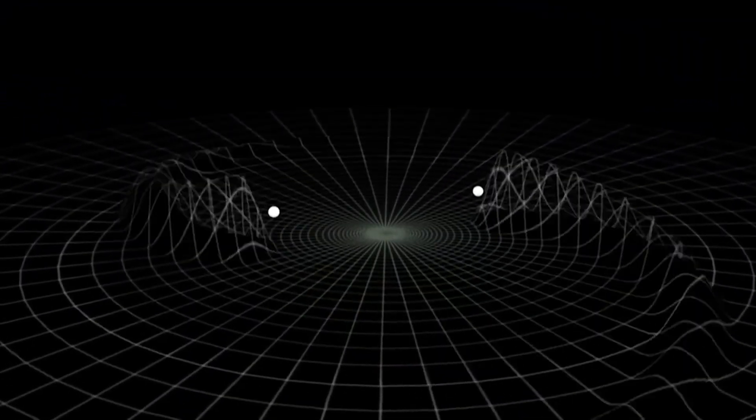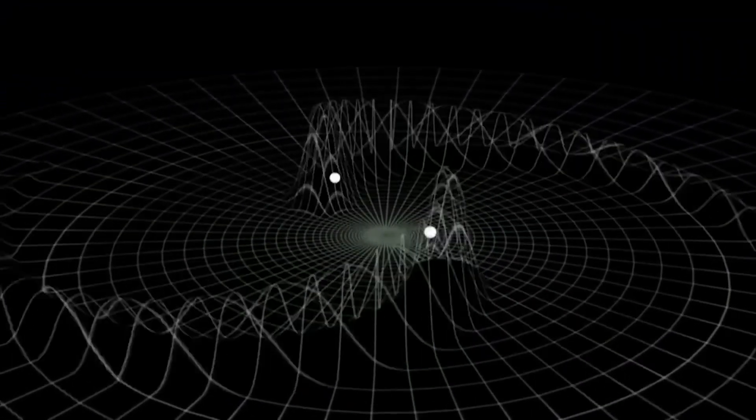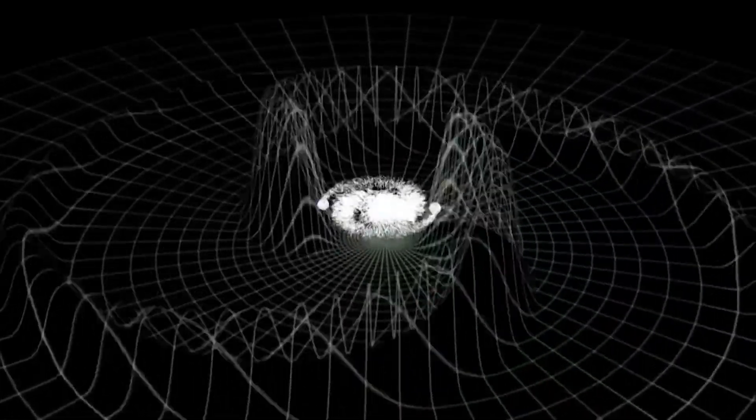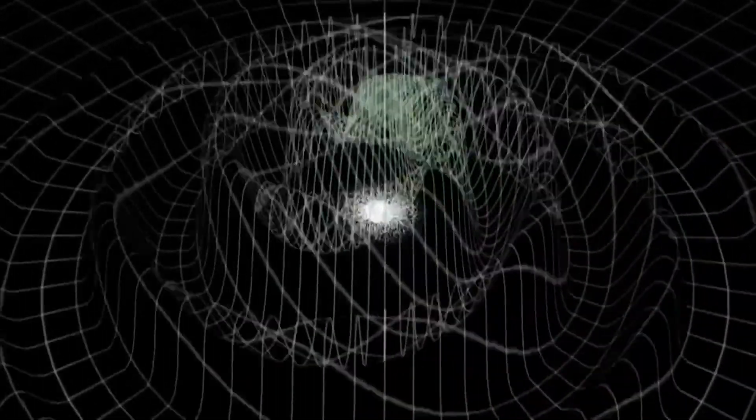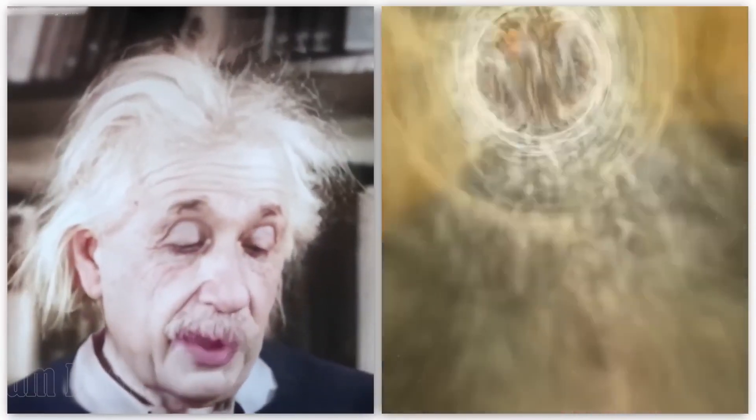Einstein's theory had many implications for the behavior of objects in the universe, including the possibility of black holes. Black holes are incredibly massive objects that are thought to form from the collapse of massive stars at the end of their lives.